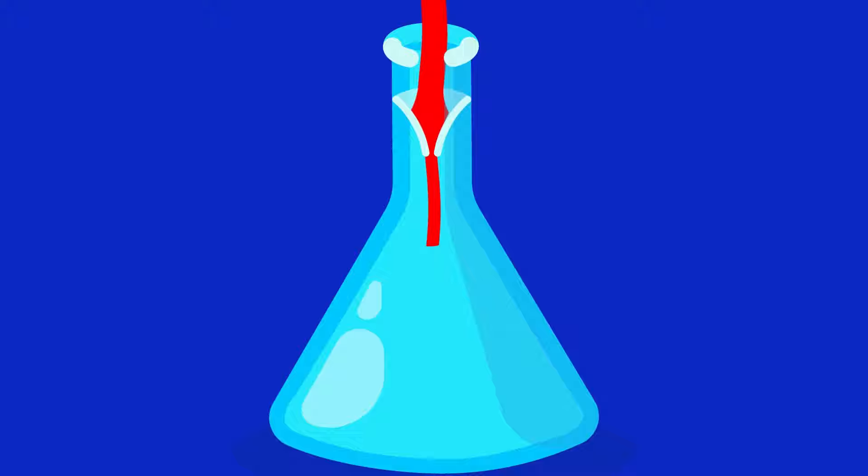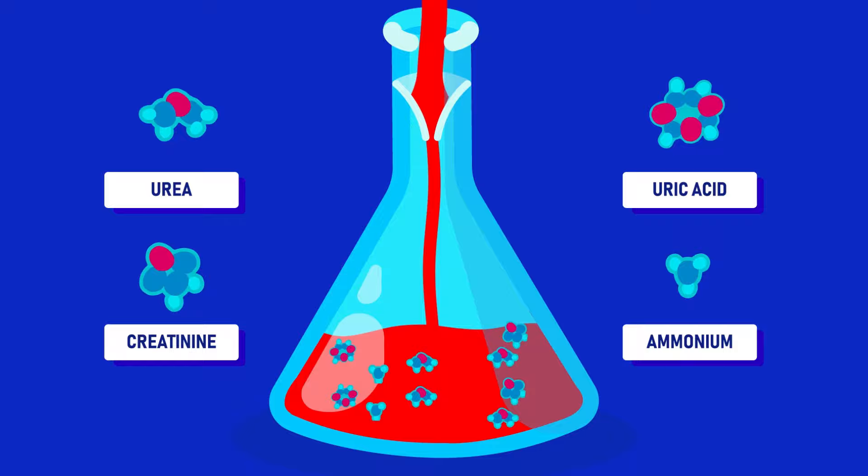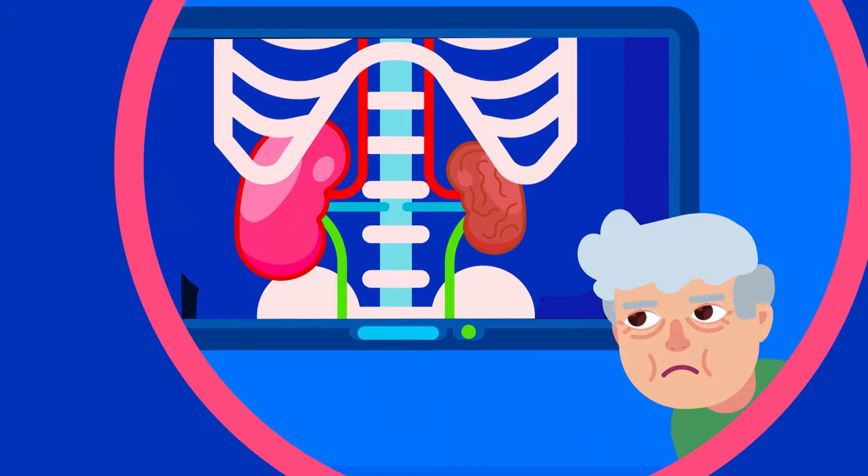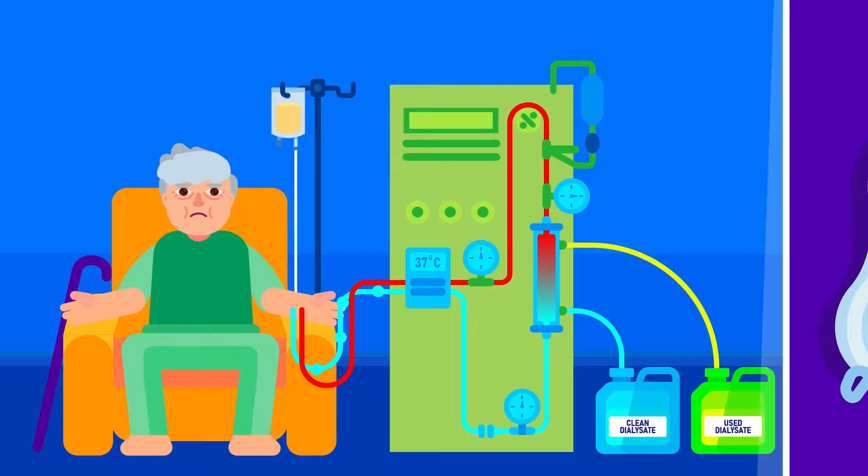Instead of being excreted, waste like urea, creatinine, uric acid, and ammonium ions remain in the blood. Accumulation of these substances is toxic to the human system and could prove to be fatal if not treated in time. The treatments currently available are dialysis or a transplant.